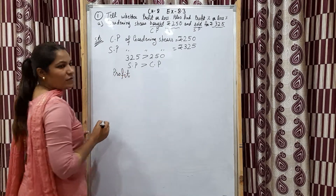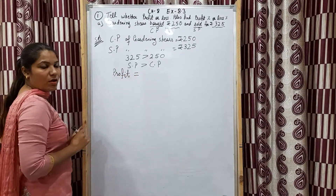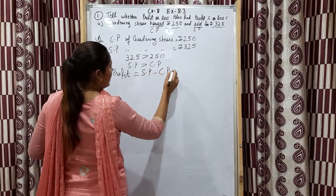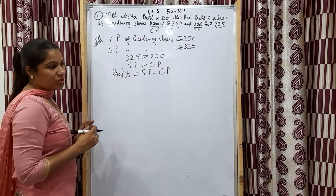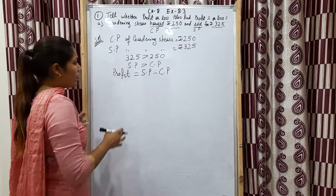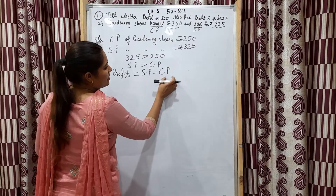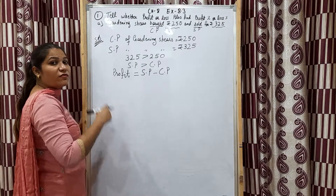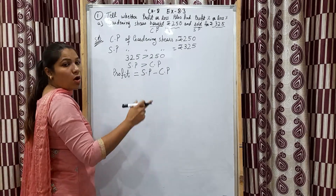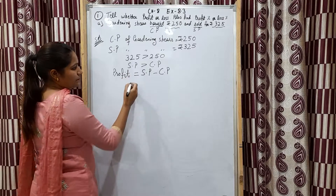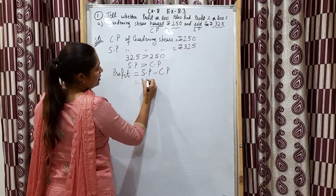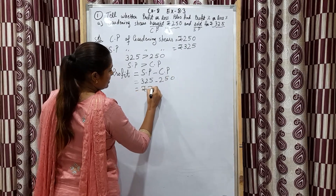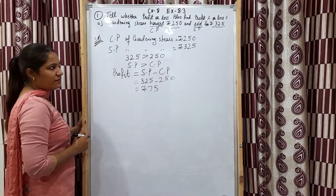Profit and gain are the same thing. The formula for profit is selling price minus cost price. If selling price is greater, we write selling price minus cost price. So 325 minus 250 gives us rupees 75. So profit is rupees 75.